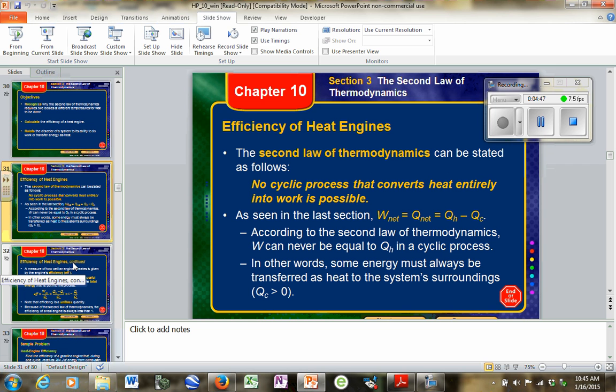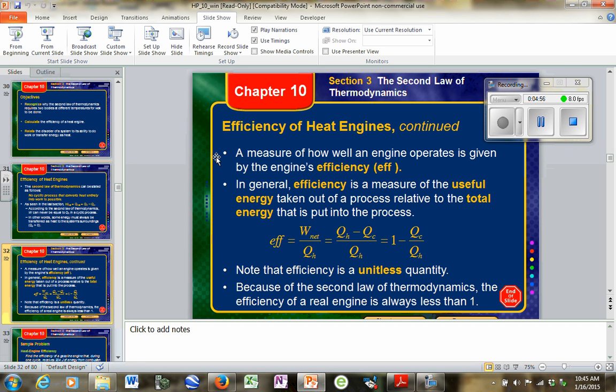Second law of thermodynamics says no cyclic process that converts heat entirely into work is possible. Just not possible. And so, if we're going to measure how much of that energy we actually do get to use to make heat, that's what we're measuring here. We're measuring the energies, the engine's efficiency. A measure of the useful energy taken out of a process relative to the total energy put in. It's work input compared to work output.